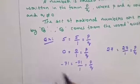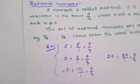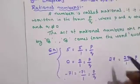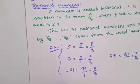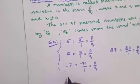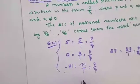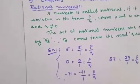Two examples: all natural numbers, all whole numbers, all integers are rational numbers.